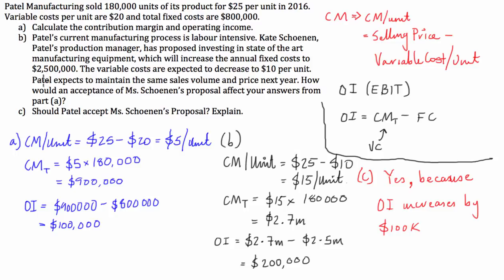Just because of how high this fixed cost is. So, if we can be sure that we're going to be able to maintain this 180,000 units of product being sold, then, yes, we should definitely take on Ms. Schoenen's proposal. However, if our volumes are looking all over the place, then maybe not. Maybe it's a little bit dangerous, because with these fixed costs, we're going to eat into our operating income very fast. But, yes, on the face of it, if we expect to have the same volume and price in a perfect world, then, yes, because our operating income will increase by $100,000.